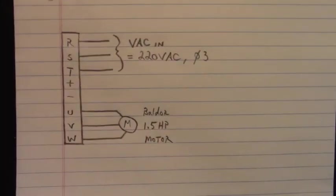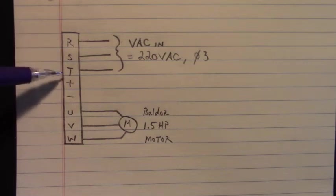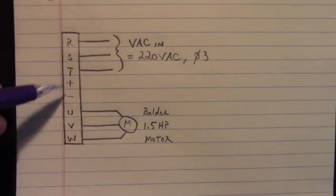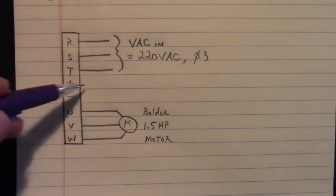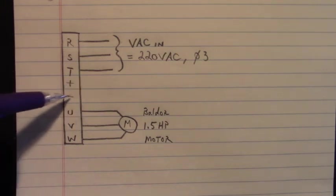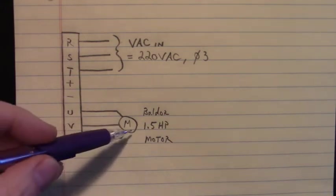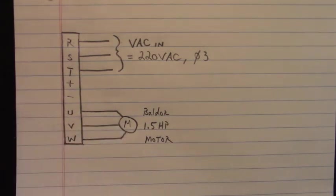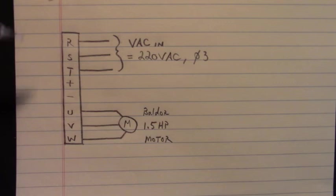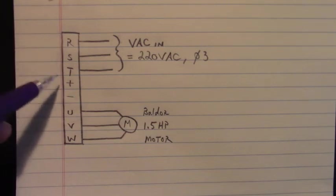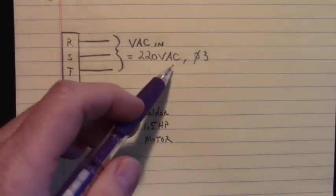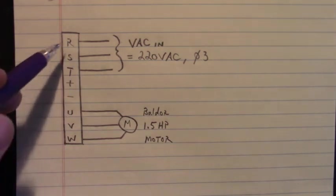Here are the power connections. There's RS and T, plus and minus, and you can look at your bus voltage out here. Now RS and T, that is our line voltage in. It's three phase, 220 volts AC on RS and T.